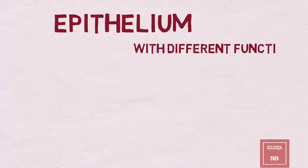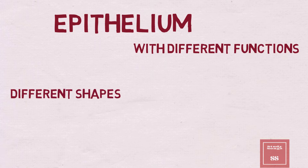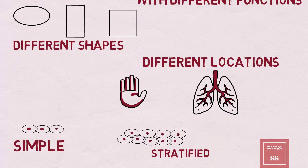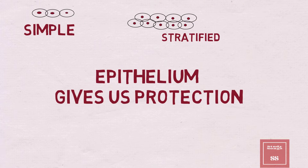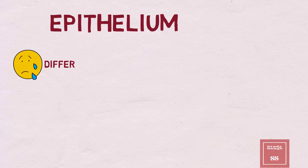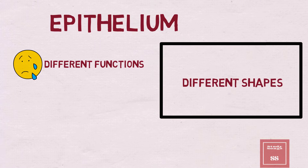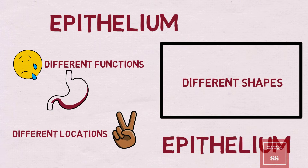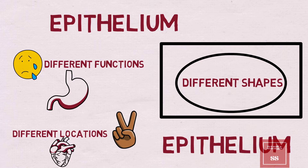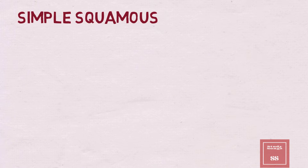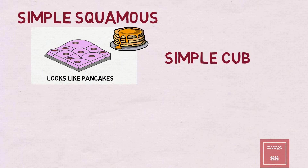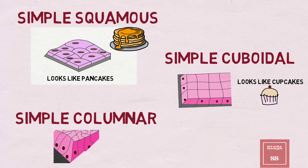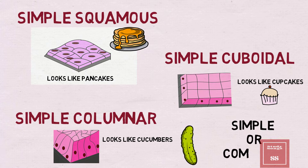Epithelium with different functions, different shapes, different locations — simple or stratified. Simple squamous looks like pancakes. Simple cuboidal looks like cupcakes. Simple columnar looks like cucumber. Simple or complex, look at the numbers.